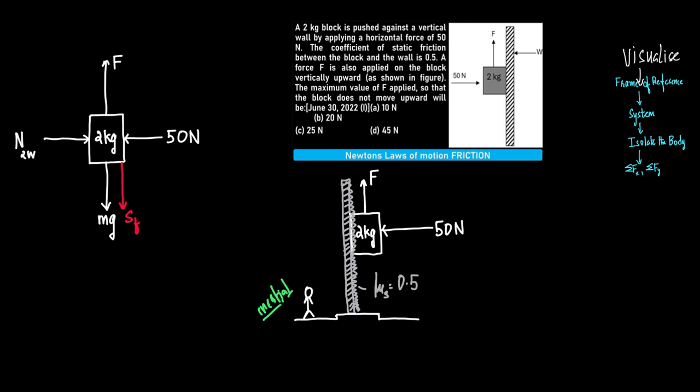Now vertically F is acting upwards. Since the body does not move upward, when F is maximum, the body is trying to move upwards. Therefore friction will try to bring it downwards. When friction tries to bring it downwards, static friction is coming into picture because there is no relative motion between these two bodies. Therefore static friction will act downwards, mg will act downwards.